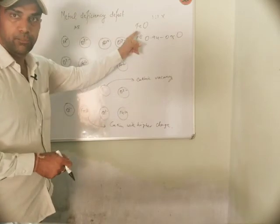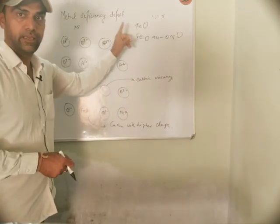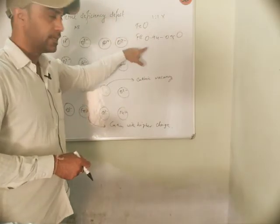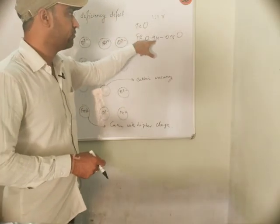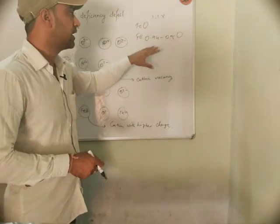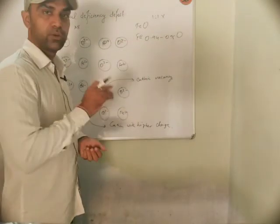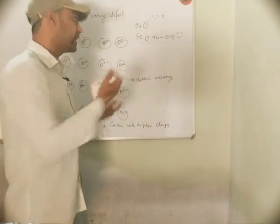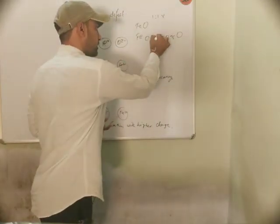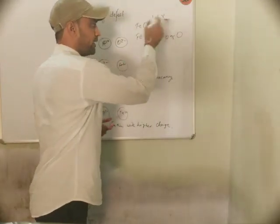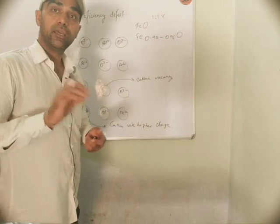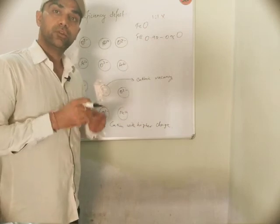In the example of FeO, this is the reason that the ratio is 0.94, 0.95, 0.96, or 0.93 — not exactly 1:1. You can see the ratio starts from 0.93 onwards. So why does this happen?